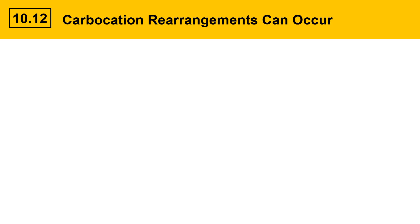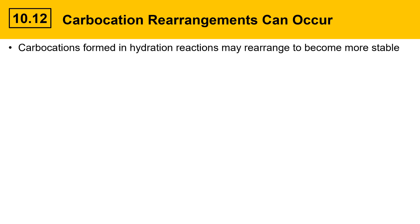Carbocation rearrangements can occur in hydration reactions. Carbocations formed in hydration reactions may rearrange to become more stable. As is true in any reaction involving a carbocation, you need to examine the carbocation intermediate and decide if it could become more stable by a hydride shift or an alkyl shift. Here's an example of an alkene where that becomes an issue.